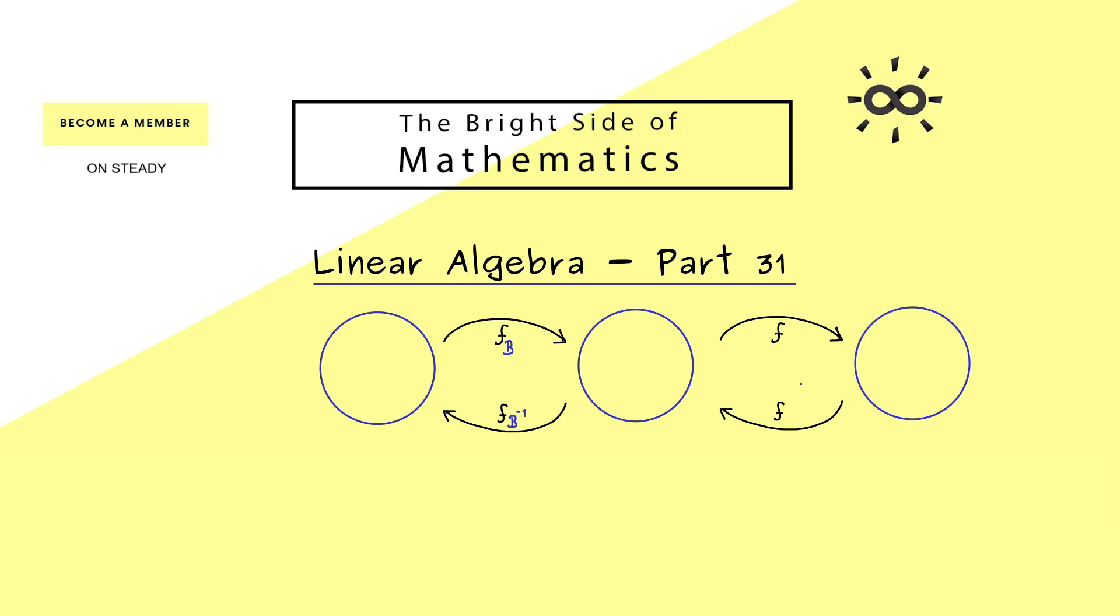And now it might be interesting to extend this picture with a second map and a second matrix A. Because then we can also look at the composition of both maps. So in fact, this is F_A after F_B. And also here, please recall this is connected to the matrix product AB.